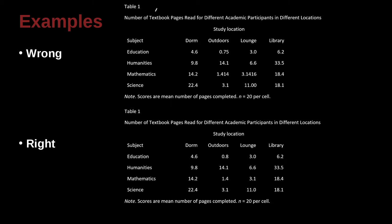Let's take a look at another example here. Number of textbook pages read for different academic participants in different locations. So we have our subjects here. We have our study location, which is going to be dorm, outdoors, lounge, and library. This is looking pretty good actually. Study location, but we have different locations. That's clear.